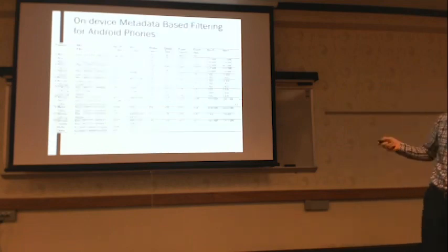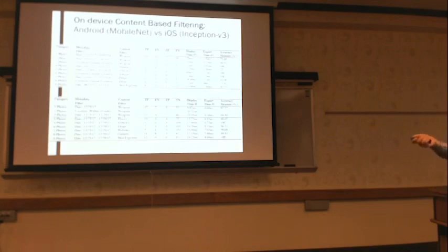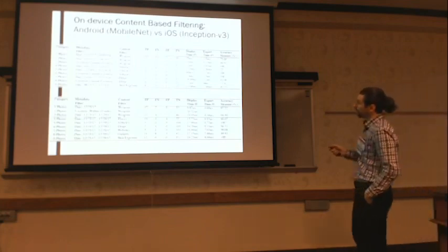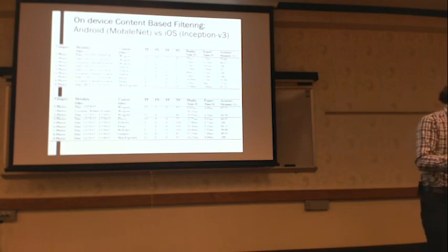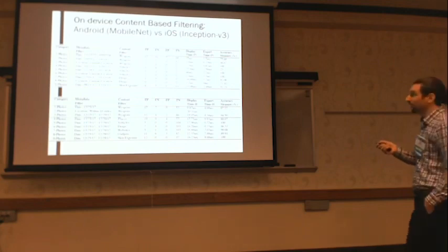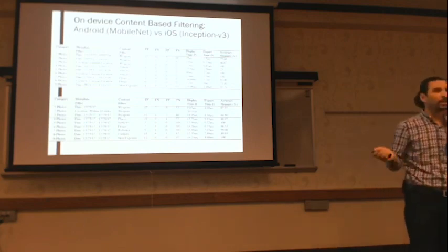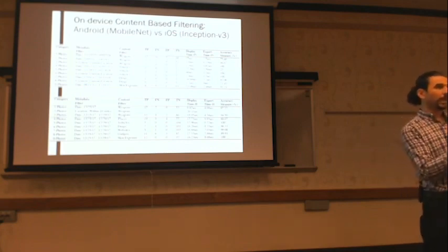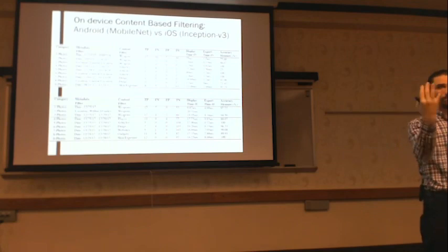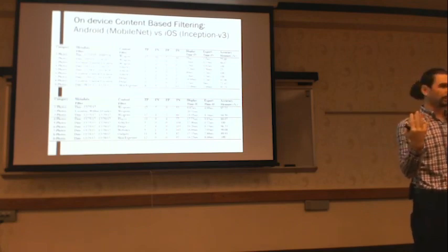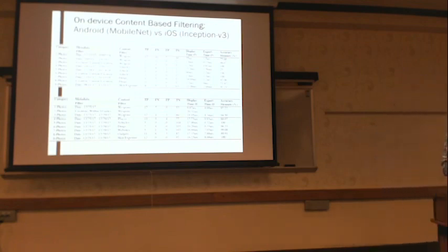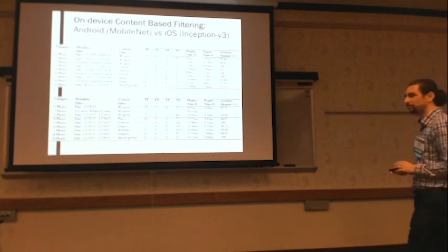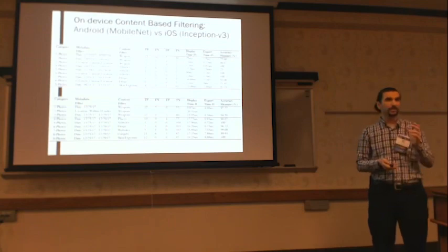For metadata filtering, accuracy is nearly 100%. For content-based filtering, using MobileNet and Inception V3, accuracy varies depending on the type of pictures. We had some cases with low accuracy — as low as 25% — where a vehicle was photographed from a different angle with a background of trees that also looked like vehicles. But the rest of the results were quite good. We can achieve solid accuracy results with content-based extraction.